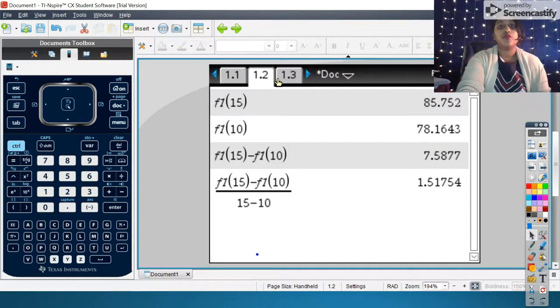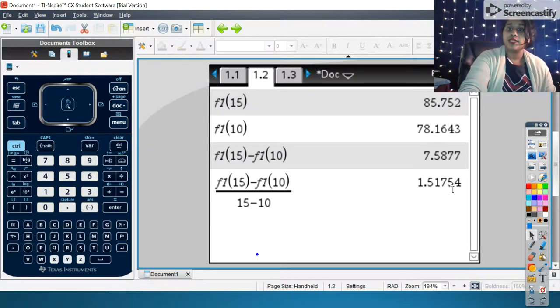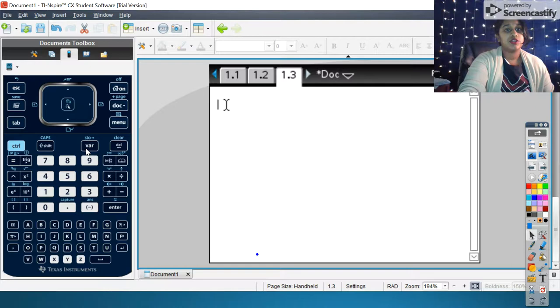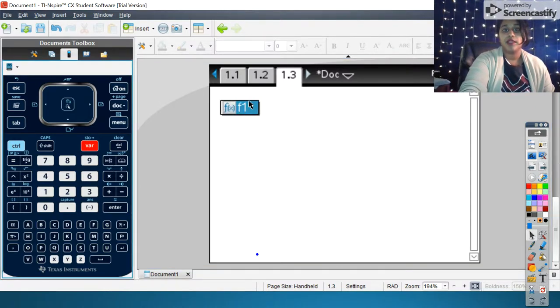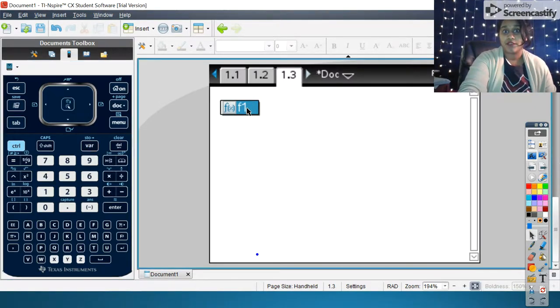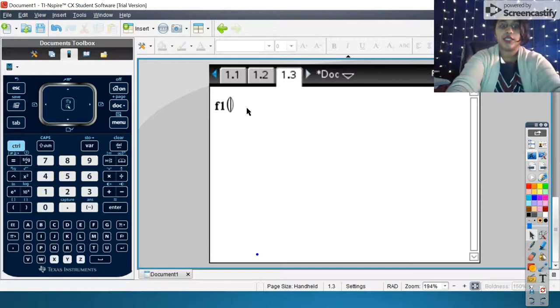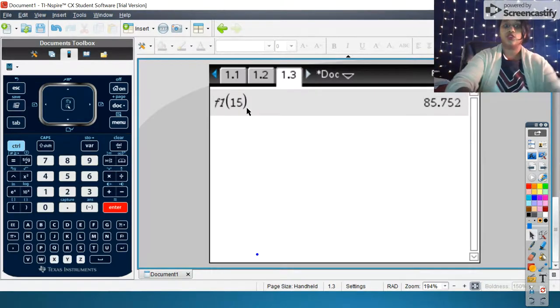And I'll show you how that looks. If you're using your calculator, you can hit the variable button, and you're prompted with your functions from your graph. So you click on it, and you could type in 15, and that gives it to you.